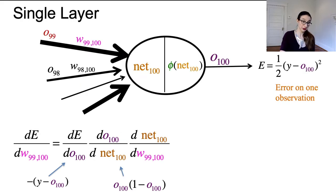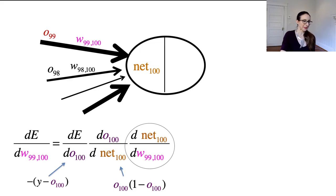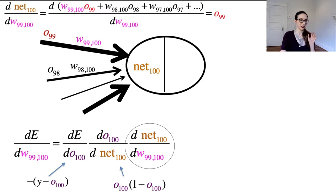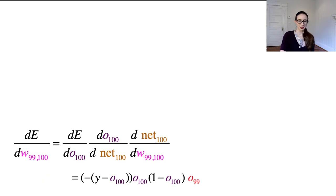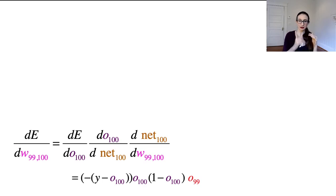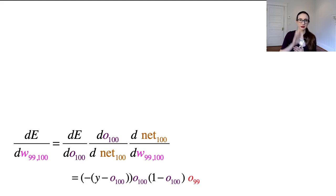For the last term, dNet100/dW99100: net100 is a sum of terms, and only one of those terms involves W99100. That term is just W99100 times O99, so the derivative is just O99. So that is the derivative of E with respect to W99100. If the whole 90s layer feeds into neuron 100, we would compute all of those derivatives. Now let's assume we know all the derivatives of E with respect to W-something-100 — that last layer of weights is done.